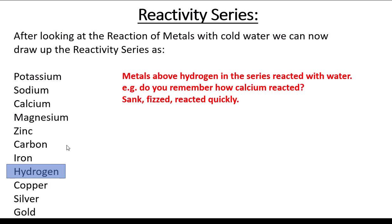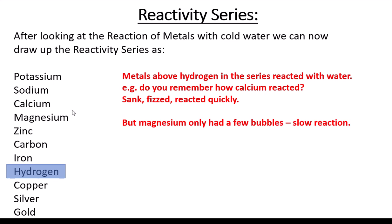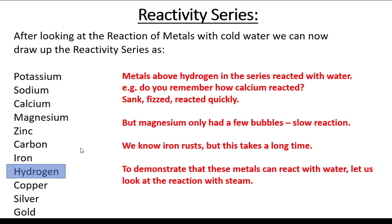Looking back at last week: calcium, up near the top, reacted very quickly — a good reaction. Magnesium didn't really react much; we only got a few bubbles, so that's not strong proof it can steal oxygen from hydrogen. Iron rusts but takes a long time, making it hard to demonstrate. So we're going to speed these reactions up by using a hotter form of water — steam — the hottest form of water.